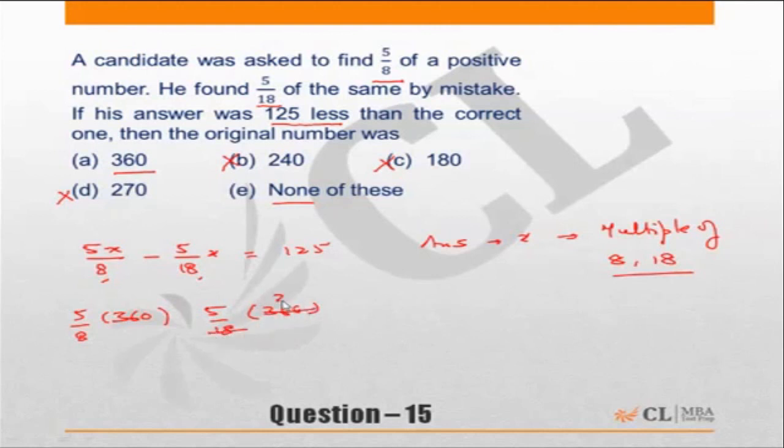So 18 into 20, so this is 5 into 20 is 100. 8 into 45, 5 of 45 is 225. 225 minus 100 is equal to 125, which tallies with the data given. Correct answer is choice A.